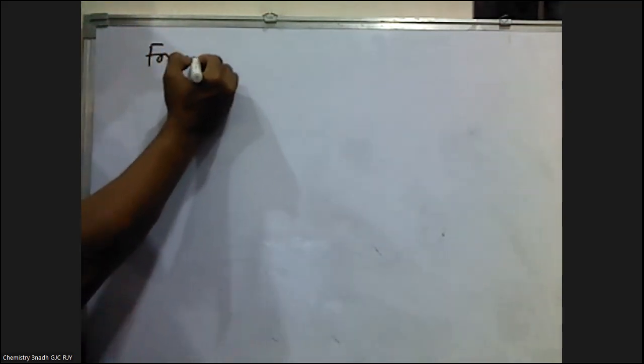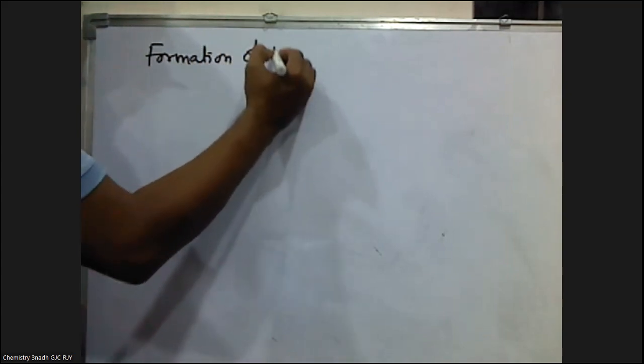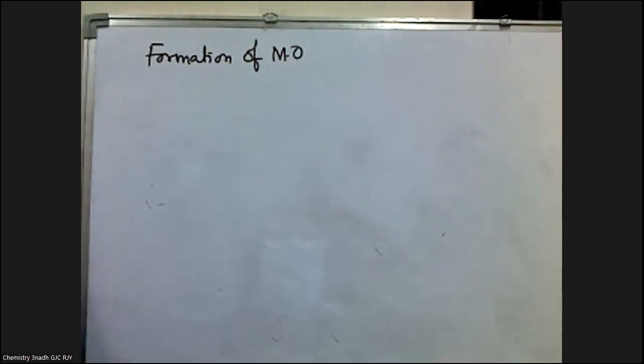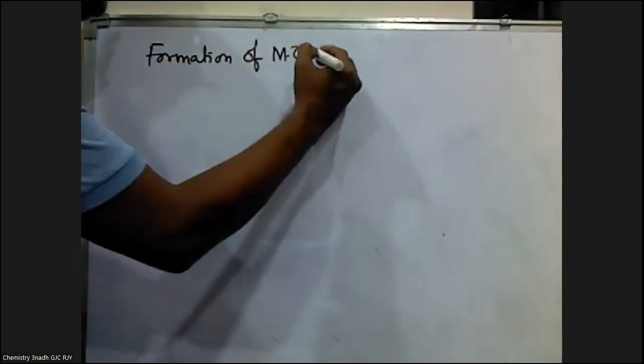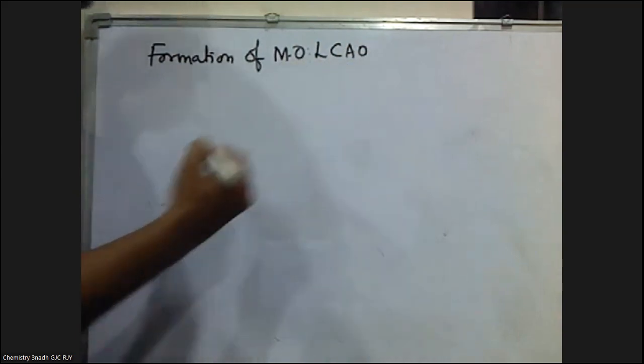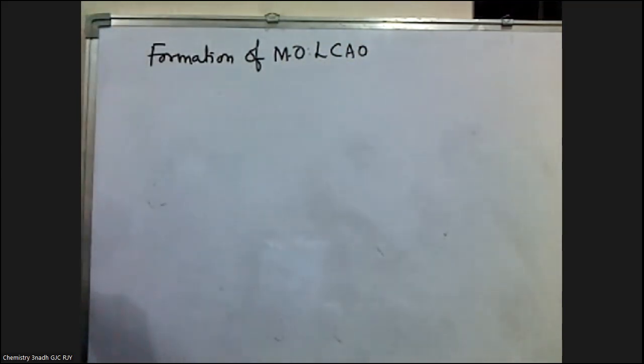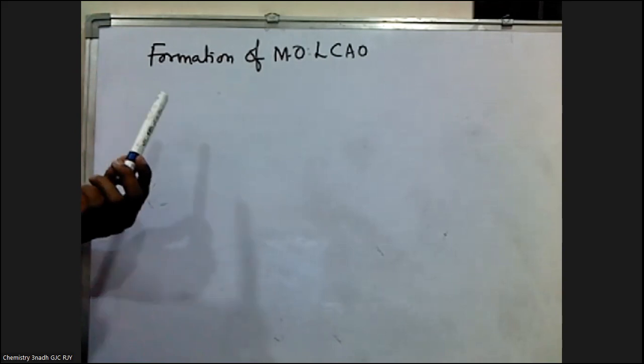Now I am going to discuss how molecular orbitals are formed, the conditions for combination of atomic orbitals, and types of molecular orbitals. For the formation of molecular orbitals, there is one approach called the LCAO approach — Linear Combination of Atomic Orbitals.